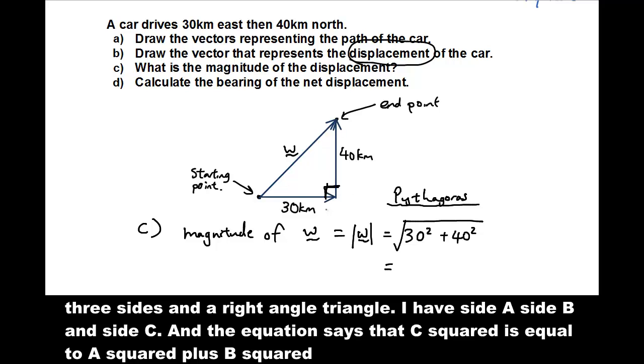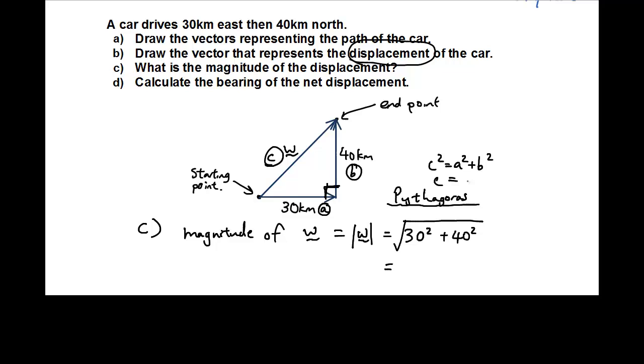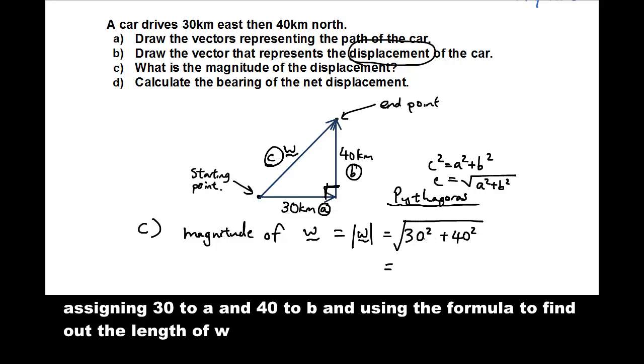three sides in the right angle triangle. I have side A, side B, and side C. And the equation says that C squared is A squared plus B squared. So C is equal to the square root of A squared plus B squared. And that's where I'm getting this from. Because C is the magnitude of W. So I'm now assigning 30 to A and 40 to B and using this formula to find out the length of W. So the answer is 50.